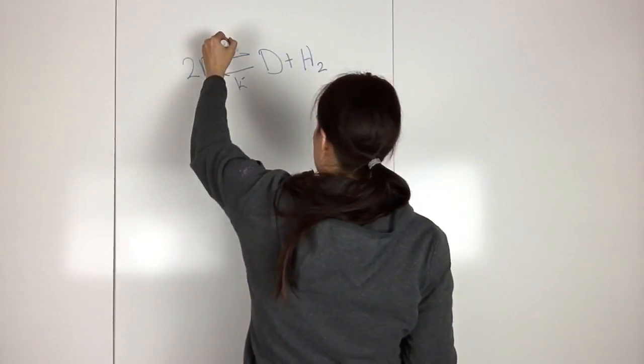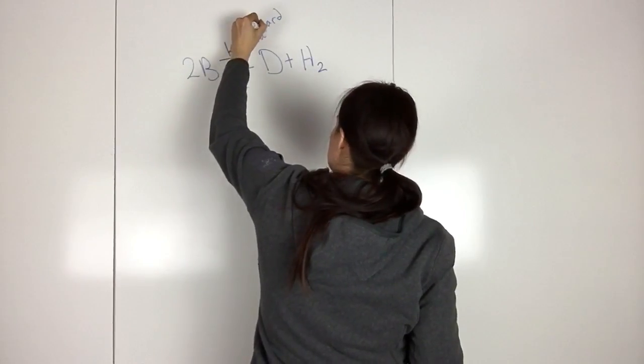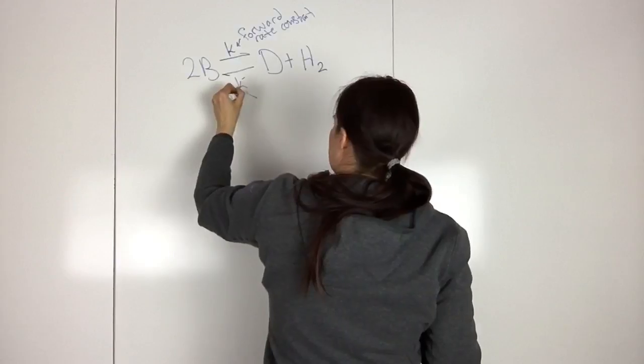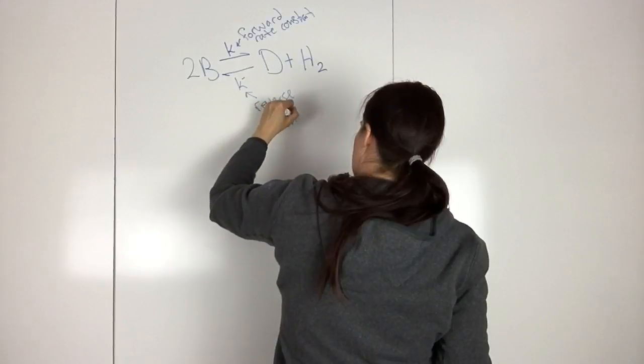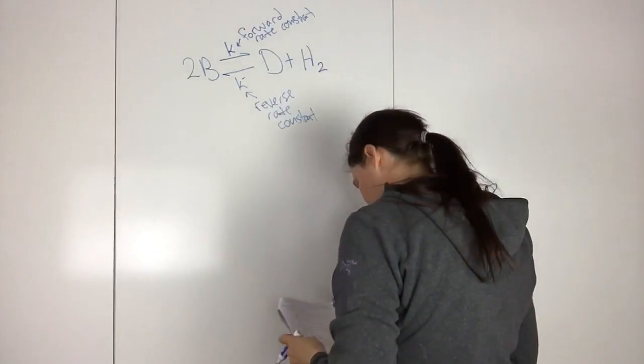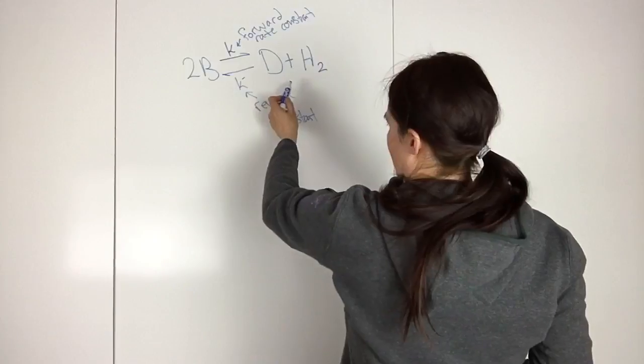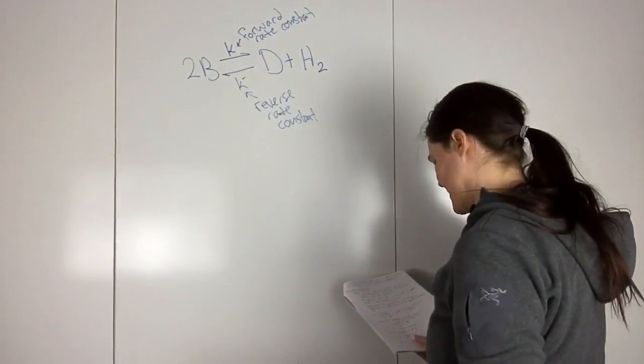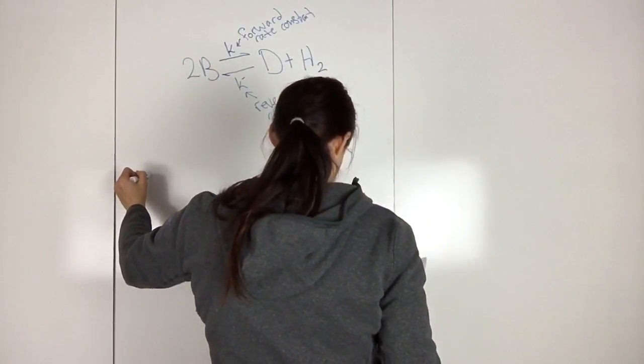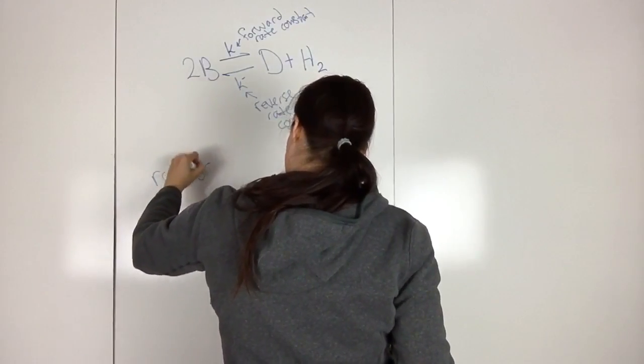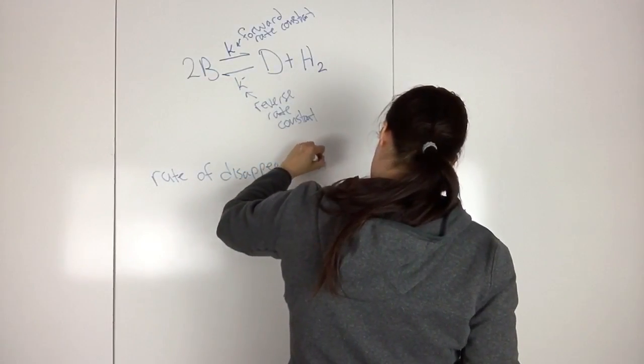This is often called the forward rate constant, and this one's the reverse rate constant. So we need to write a rate for going this way, and then another rate for going the reverse direction. To start out, we'll write the rate for the disappearance of B. So rate of disappearance of B.